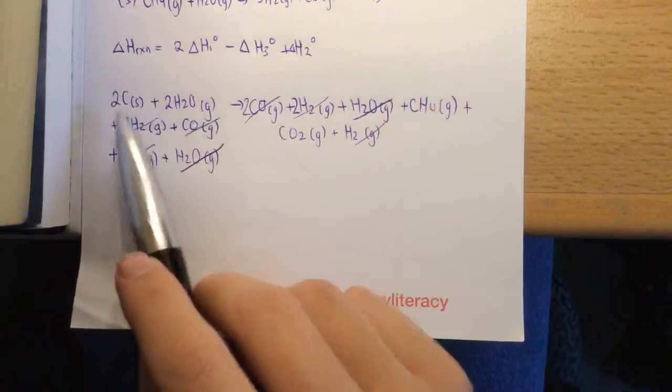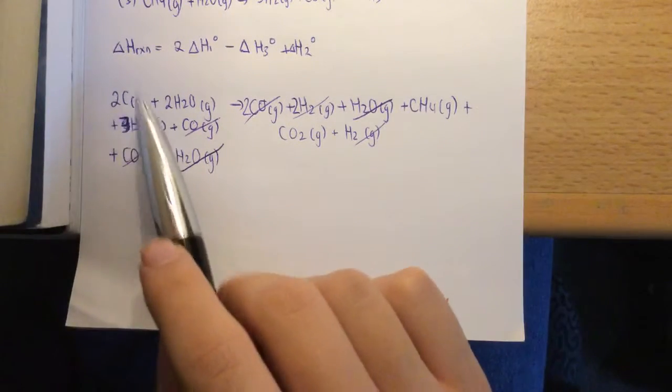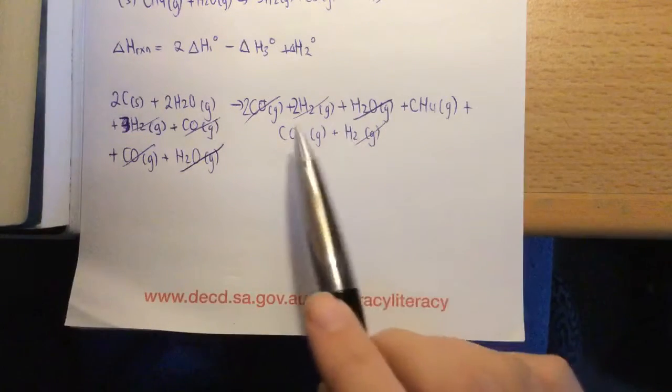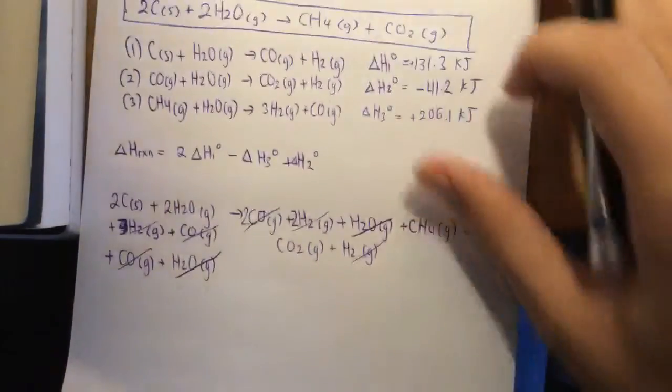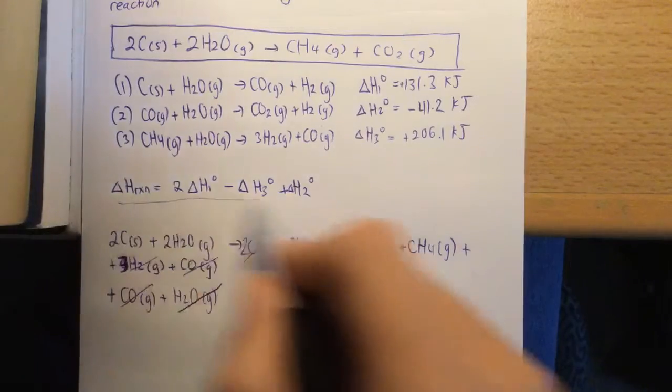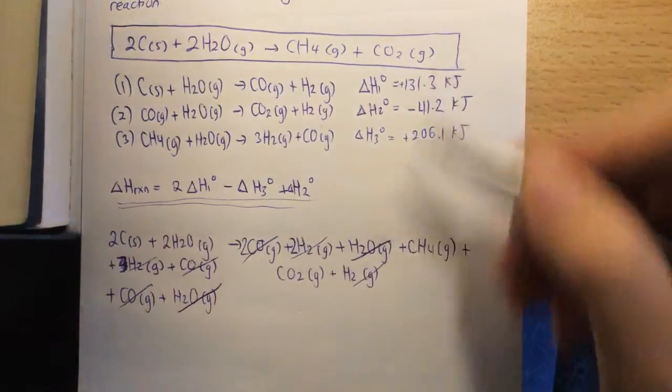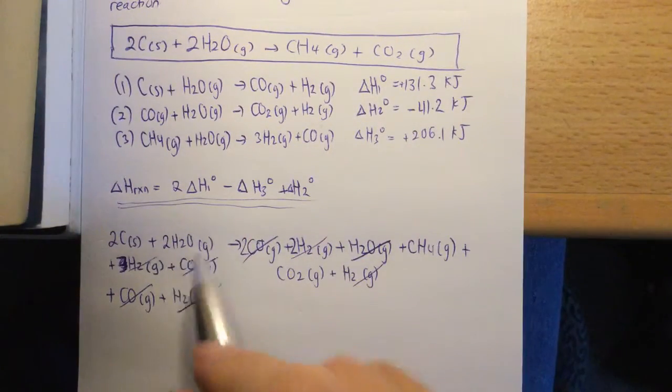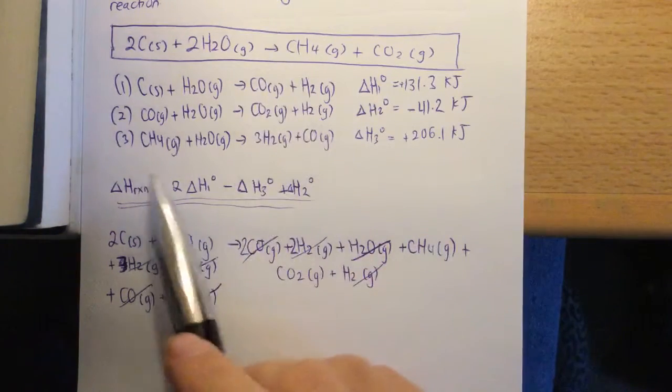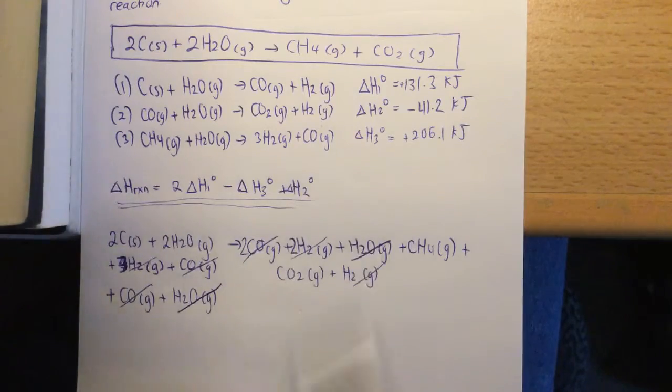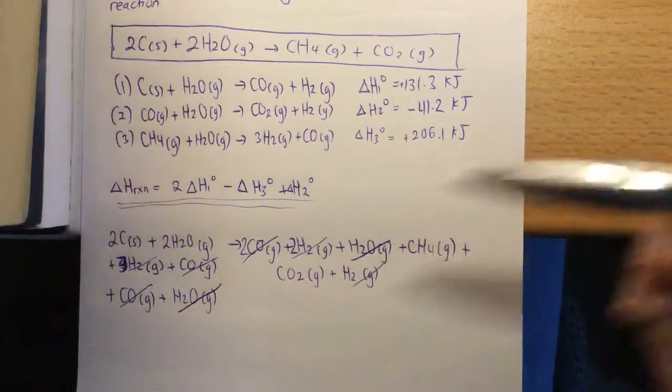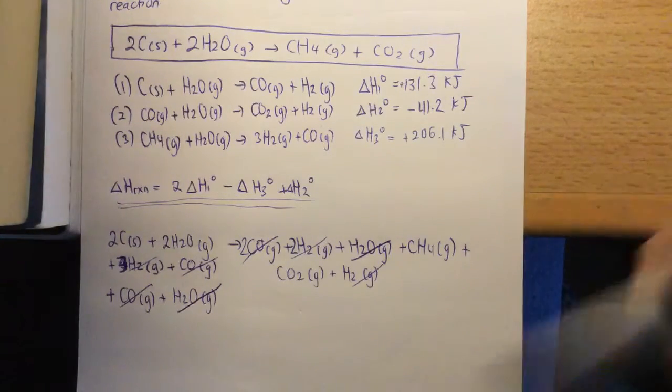And voila, look what we get. We get two C in solid state, plus two H2O gas, going to CH4 gas, plus CO2 gas. And that looks awfully familiar, because as you can see up here, we have got the original equation. So hence, this is our delta H for that reaction, because when we add those reactions together, we obviously get the original equation. So delta H values must be the same. Because remember, enthalpy, state function, is path independent. It doesn't matter which path you take to get there, the delta H will be the same.